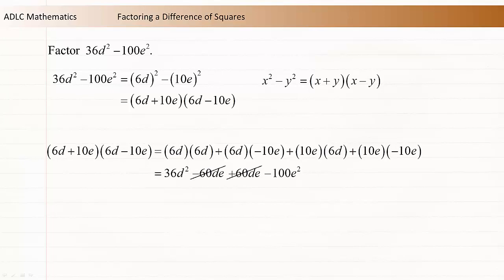The negative 60de and the positive 60de reduce, and we're left with 36d squared minus 100e squared, our original expression.